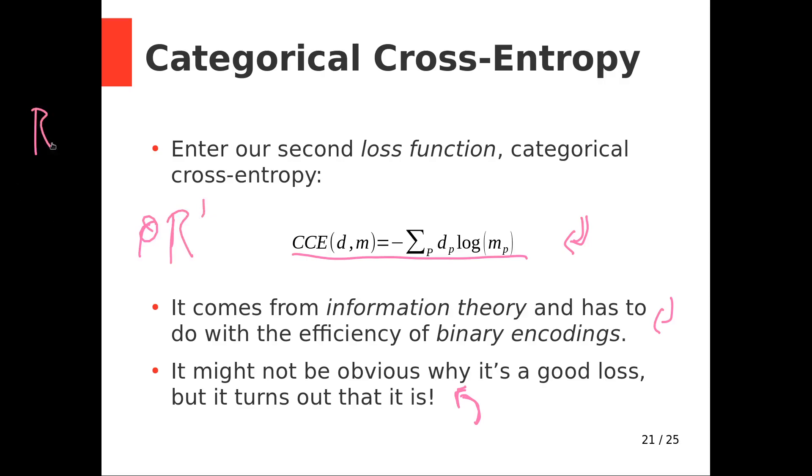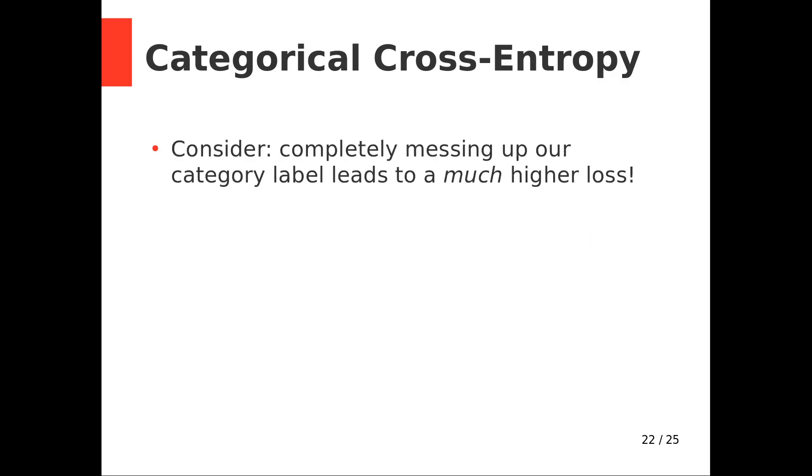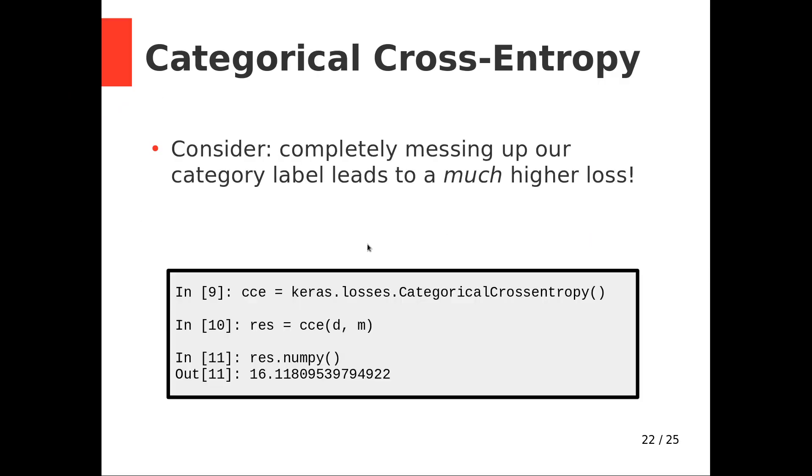It has to take a vector of multiple inputs. And it has to go down as performance improves. This happens to satisfy all of those properties. It has the useful additional property that if we completely mess up our category label, our loss ends up being much higher.